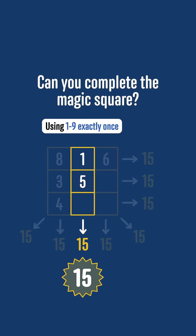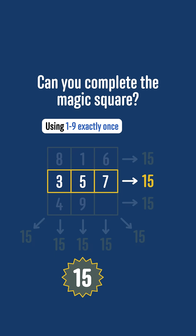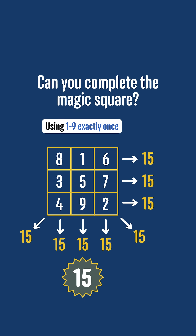The middle column has a 1 and a 5, so the bottom middle number must be 15 minus 5 minus 1, which is 9. The middle row has a 3 and a 5, so the middle right number is 15 minus 3 minus 5, which is 7. Finally, the other diagonal has an 8 and a 5, so the bottom right number is 15 minus 8 minus 5, which is 2, and then we have completed the magic square.